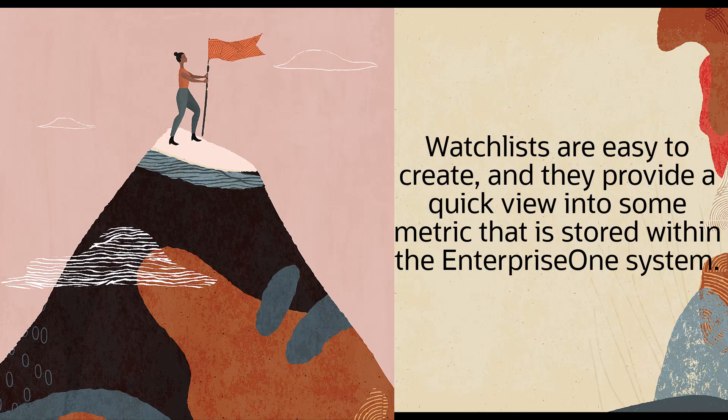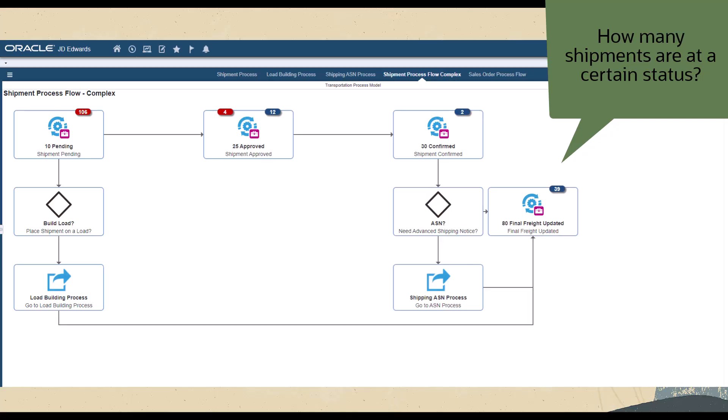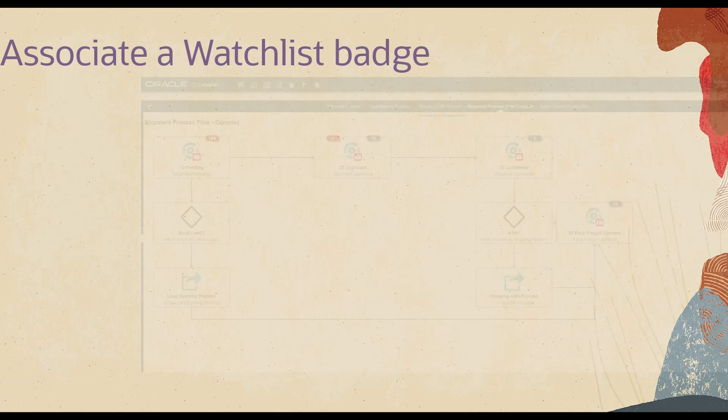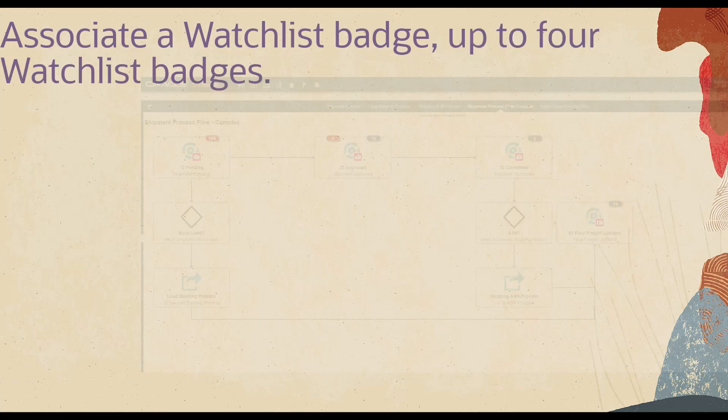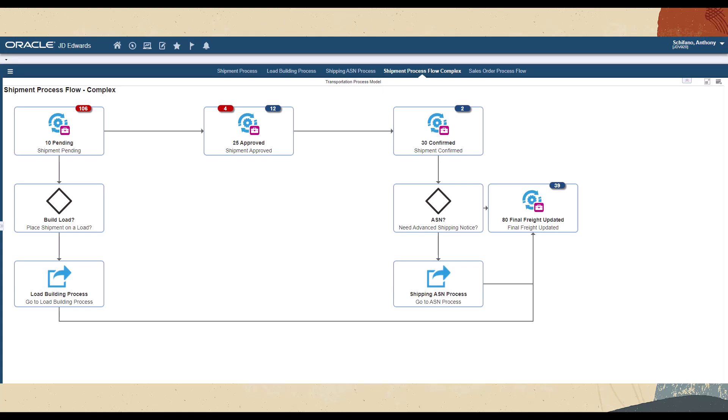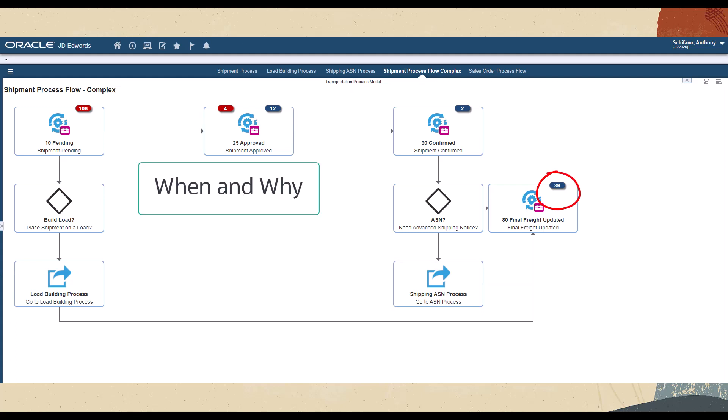Watchlists are easy to create, and they provide a quick view into some metric that is stored within the Enterprise One system — for example, how many shipments are at a certain status. This feature enables you to associate a watchlist badge — in fact, up to 4 watchlist badges — with a tile on a page. While the tiles themselves enable users to launch into actions, the watchlist badges provide additional context about when and why action might be required.